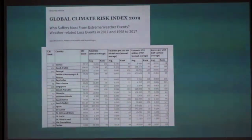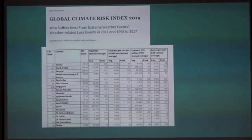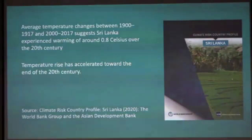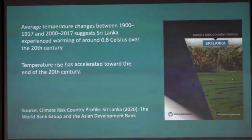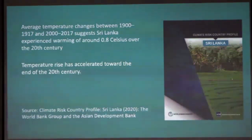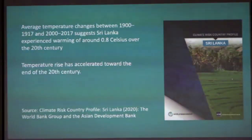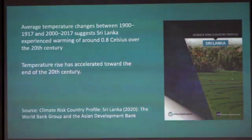Sri Lanka, if you look at the climate risk indexes, is typically around 30th globally — so it faces quite extreme risk from the impacts of climate change. Analysis has shown that over the last 100 years, on average the temperature is about 0.8 to 0.9 degrees higher than it was 100 years ago. Importantly, the temperature rise has accelerated in recent decades and that trend is continuing to increase.